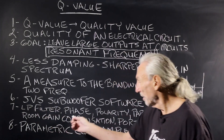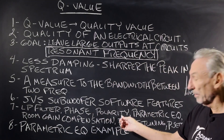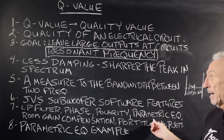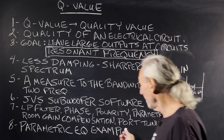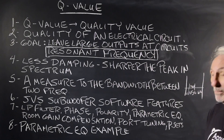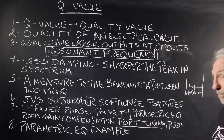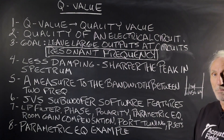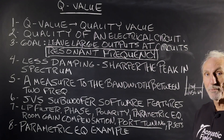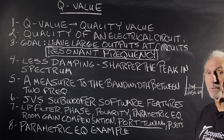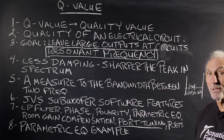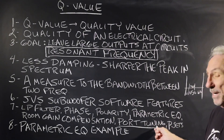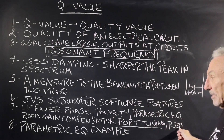Low pass filters, phase, polarity — parametric EQ, my favorite, we're going to walk through that one. Room gain compensation — I don't really know what that is yet, haven't had a chance to play with it, but I definitely will. Look at this — port tuning! How did we do that in the olden days? Foam, fabric in the ports? That was as crazy as can be. I still put foam in the ports, but it's predictable and consistent — I know what it's going to sound like. But now we can electronically tune the ports. My gosh. Presets, so you can hold your settings.